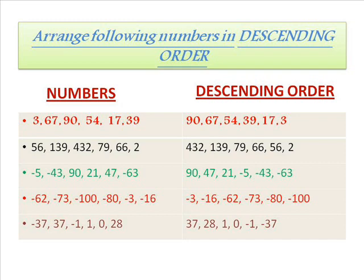In the third example I have taken the combination of both positive and negative numbers. Numbers are: minus 5, minus 43, 90, 21, 47, minus 63. Order is: 90, 47, 21, minus 5, minus 43, minus 63. In the fourth example I have taken all negative numbers, that is: minus 62, minus 73, minus 100, minus 80, minus 3, minus 16. Order is: minus 3, minus 16, minus 62, minus 73, minus 80, minus 100.